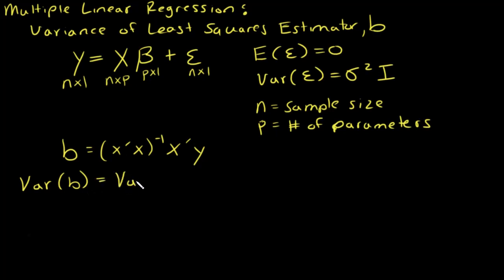Right now what I want to know is what's the variance of B? So this is going to equal the variance of x transpose x inverse x transpose y. We have the assumption that x is not random. Remember as a side fact about variance, if you have a vector that's not random times a vector that is random, this equals the non-random vector times the variance of the random vector times the non-random vector transposed.